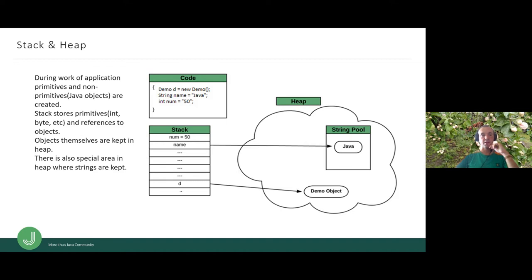The last line of code on this slide has an integer equal to 50. There is a primitive, and we do not create anything in the heap — every primitive in Java is stored only on the stack. After returning from a method we have no access to this value. If we return from a method we do have access to objects if we have other references. That's the main difference.